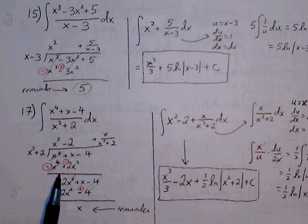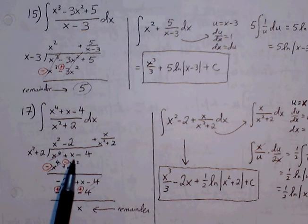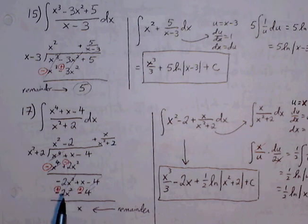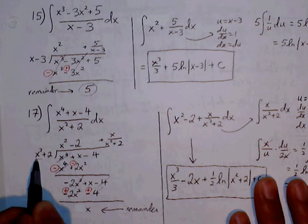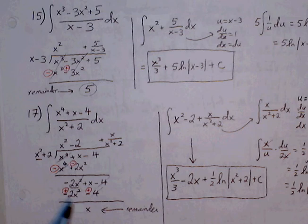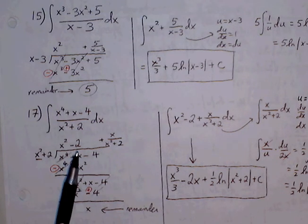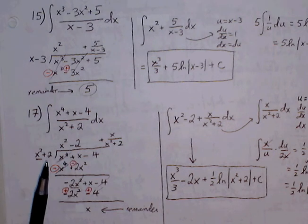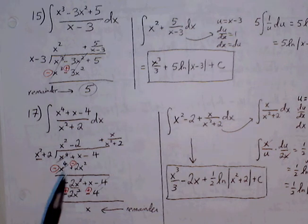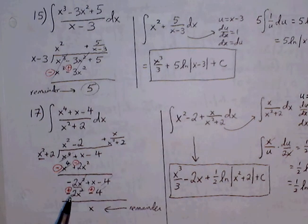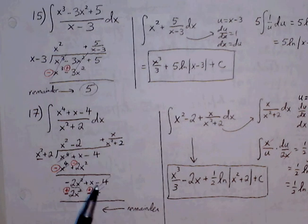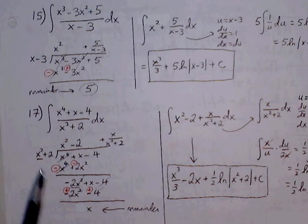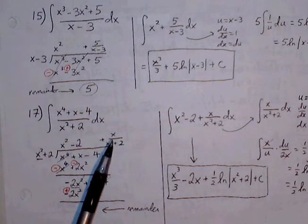Draw the line, change signs — positive becomes negative. First terms cancel out, and we have negative 2x squared plus x minus 4. No like terms, so we write them out with highest degree first. Matching up again: x squared times what gives negative 2x squared — that's negative 2. Multiply negative 2 through the divisor: negative 2x squared and negative 4. Draw the line, change signs. The negative 2x squared and the 4 cancel out, leaving x. Since x squared cannot go into x, we write the remainder as x over x squared plus 2.